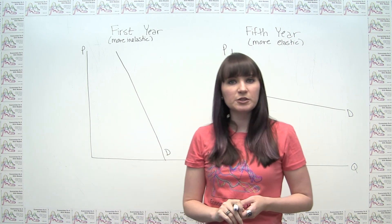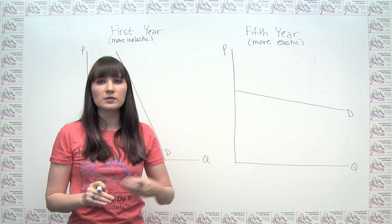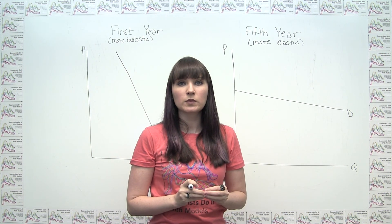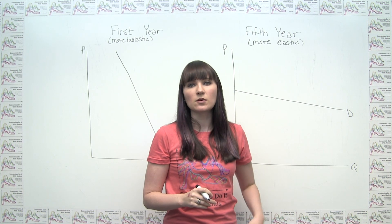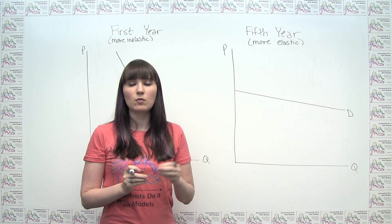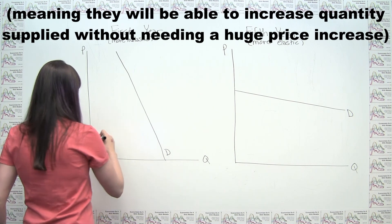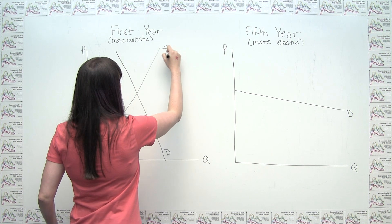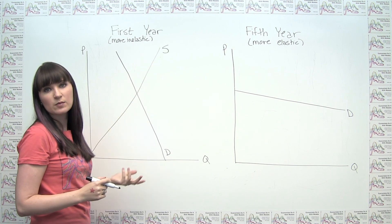The same is going to be true for supply as well, because over a longer time horizon producers are able to introduce more flexibility into their production processes than in the short term. In the short term they might be committed to particular ways of doing things, particular factory sizes, and so on. In the short run, more inelastic behavior on the part of suppliers is shown by a steeper supply curve.